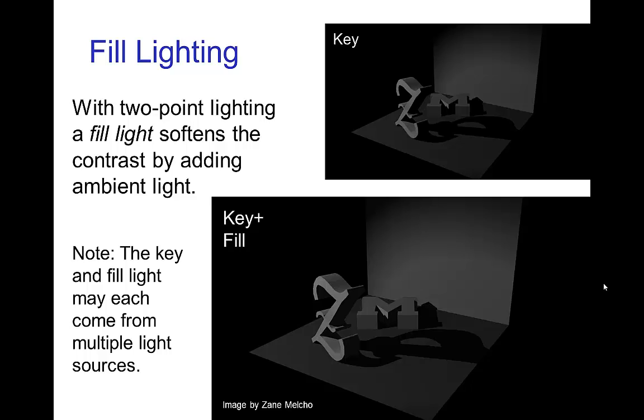Now I should mention that it's possible to use multiple light sources to represent each of these key and fill. So the key may be composed of multiple light sources and the fill can certainly be composed of multiple light sources to create that ambient light.